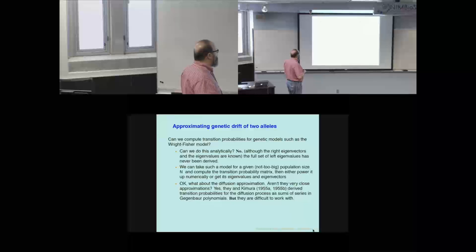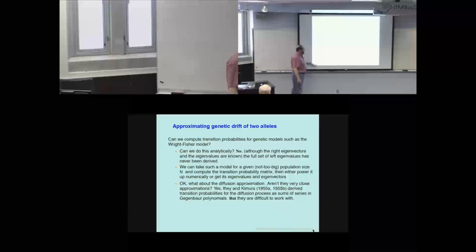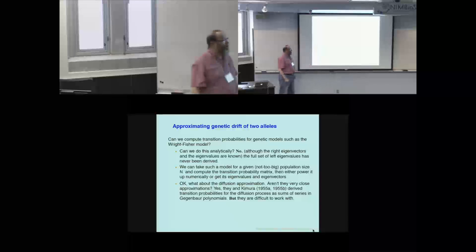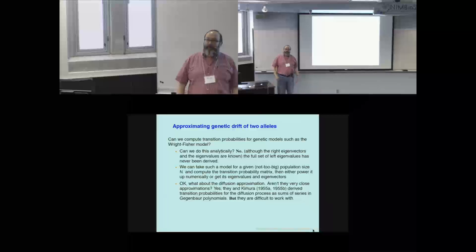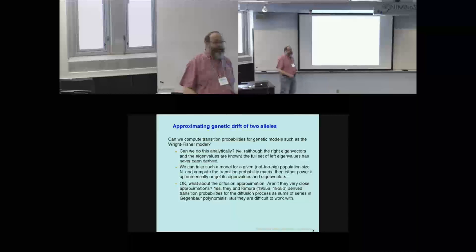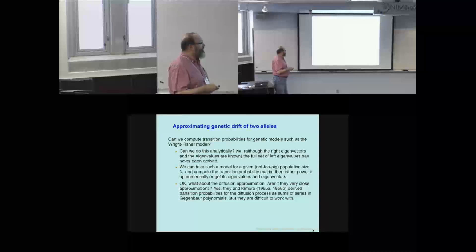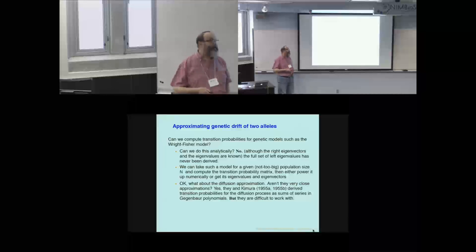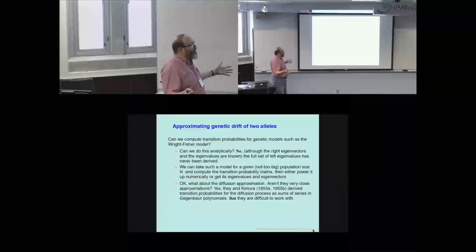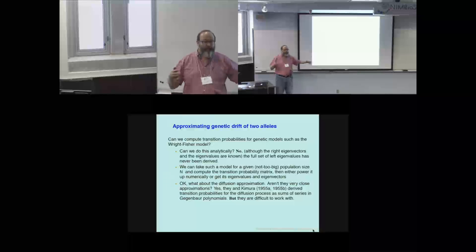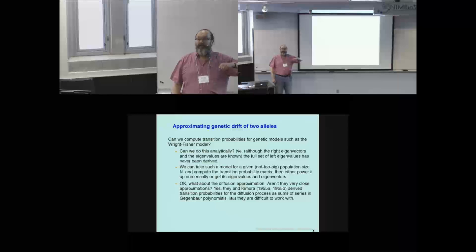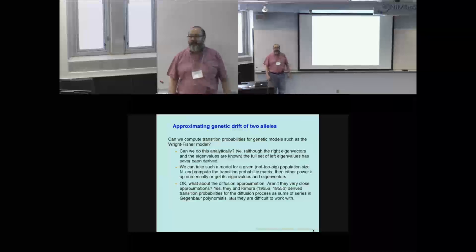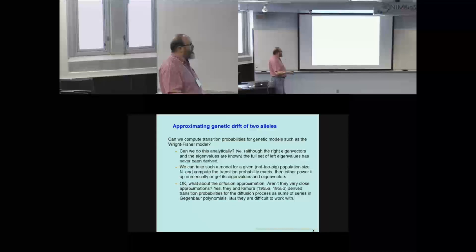You can alternatively look at diffusion approximations — there's very elaborate work by Motoo Kimura early in his career, in which he got power series of Gegenbauer polynomials for transition probabilities. They can be computed that way, but it's very tedious mathematically and numerically. You can also do it numerically by making big transition matrices in the computer and powering them up. You can get eigenvalues and eigenvectors numerically and put together T generations from now. However, none of those is a really easy, simple method. So people have looked for approximations.